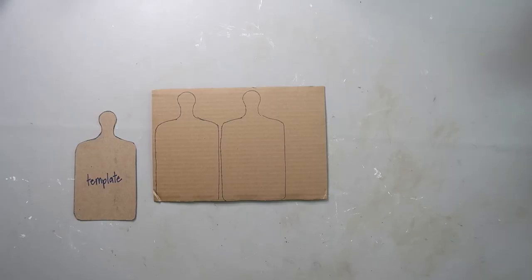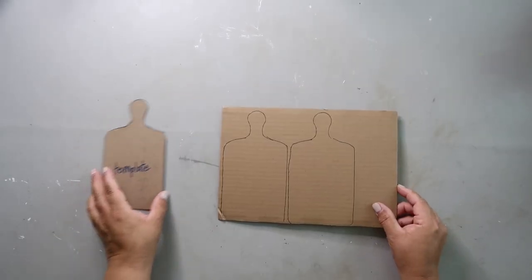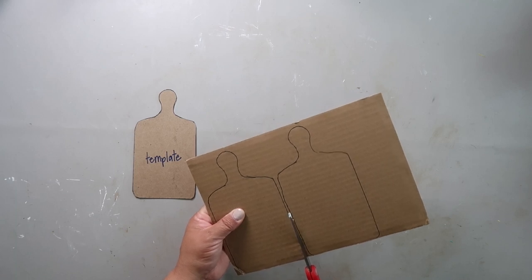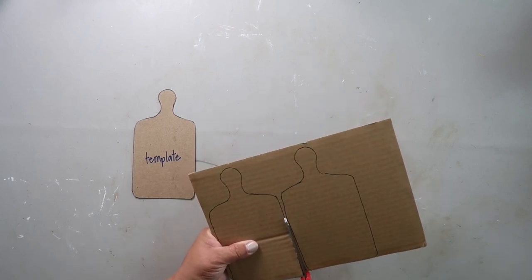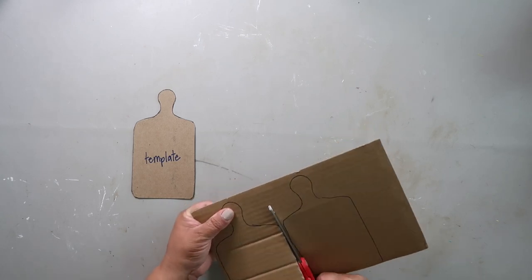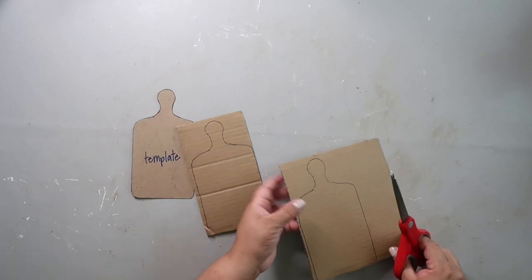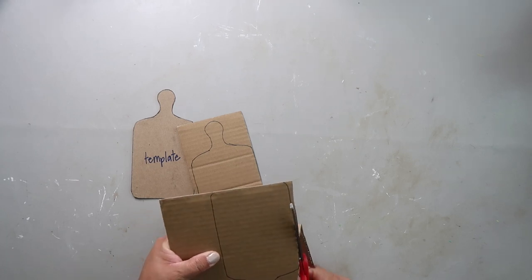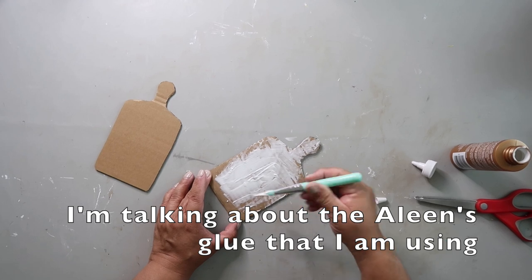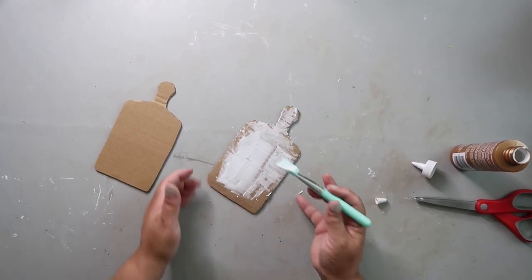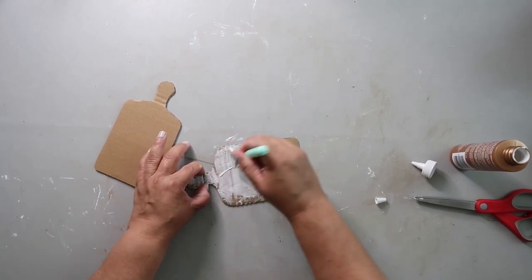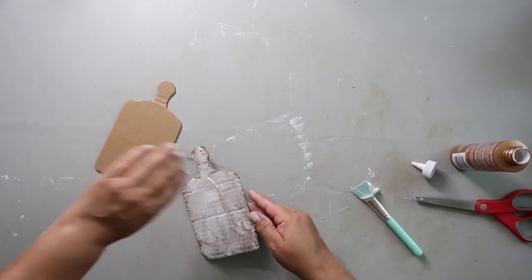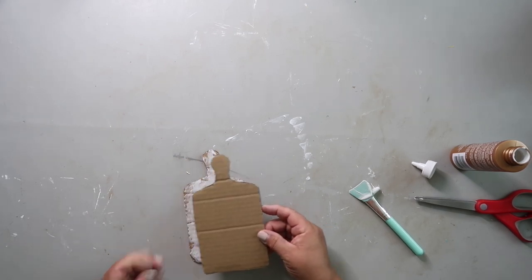DIY number two. I am going to be making a cutting board, and this was inspired by Holly at Hot Humble Pie, and I'll leave a link in the description box below to her project and how she did it. So I made this template. Mine's a little bit larger than the one she did. I'll have a link to a free printable for you guys as well if you want to try to recreate this project, and I just cut two of them out of cardboard. You're just going to glue those two pieces of cardboard together, and that's going to make it a thicker piece of cardboard.